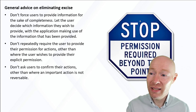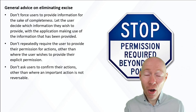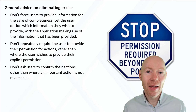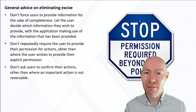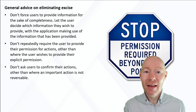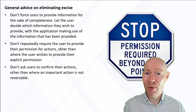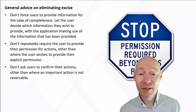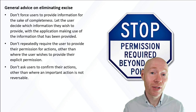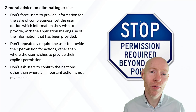Related to that, don't ask users to confirm their actions other than where an action isn't reversible. Only in the case where we can't undo something do we need to ask users whether they're certain, because the action can't be undone. If it can be undone, we don't need to ask users 'Are you sure?' — they have a way of indicating afterwards if it wasn't what they intended.